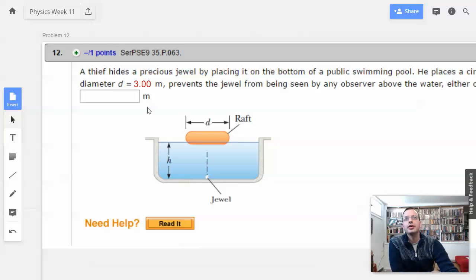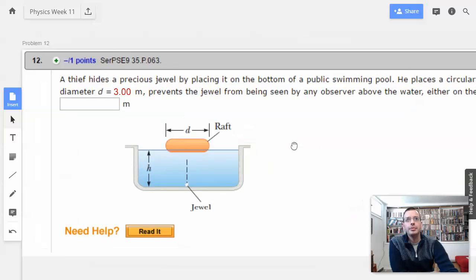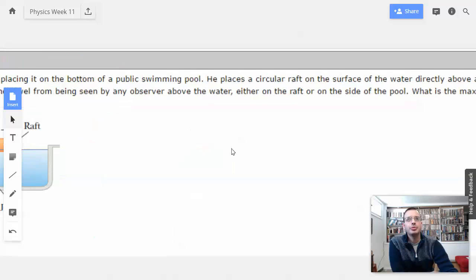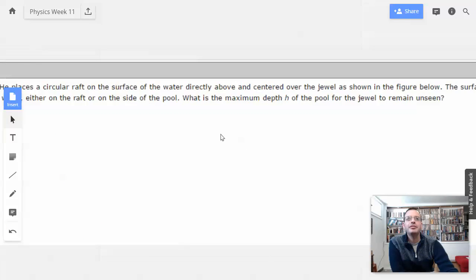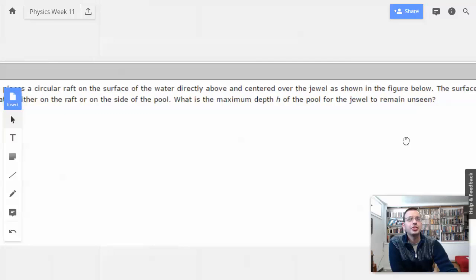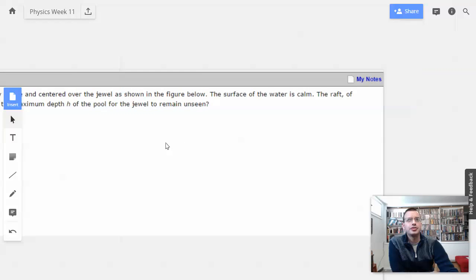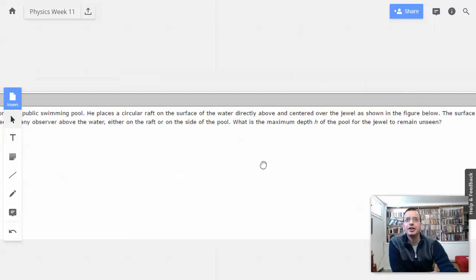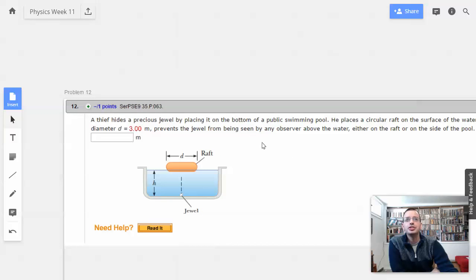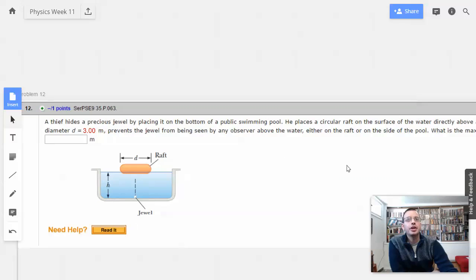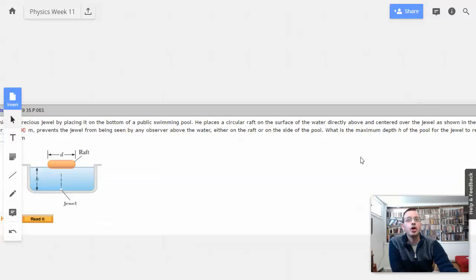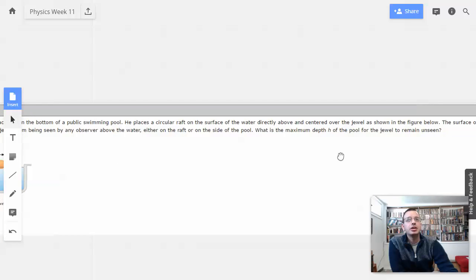Week 11, problem 12. A jewel thief hides a precious jewel by placing it on the bottom of a public swimming pool. He places a circular raft on the surface of the water directly above and centered over the jewel as shown in the video below. The surface of the water is calm. The raft of diameter 3 meters prevents the jewel from being seen by any observer above the water, either on the raft or on the side of the pool. What is the depth h of the pool for the jewel to remain unseen?